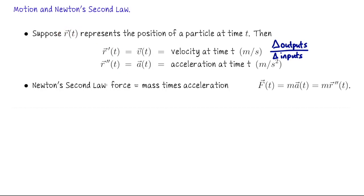Suppose some force is acting on this object causing it to move along some trajectory. Newton's second law tells us that the total force acting on the object is equal to the mass of the object times its acceleration. If we think of the total force as a vector, that would be the mass, which is a scalar quantity, times the acceleration vector — m times a of t, or m times R double prime.